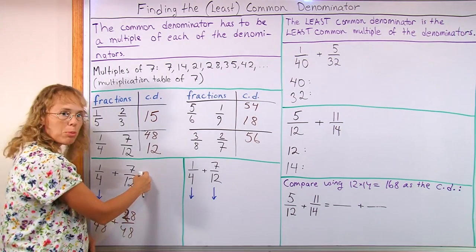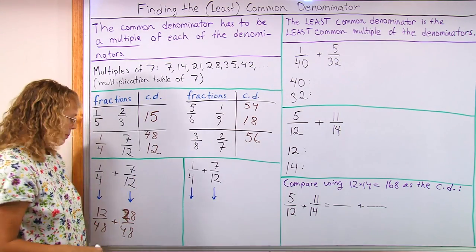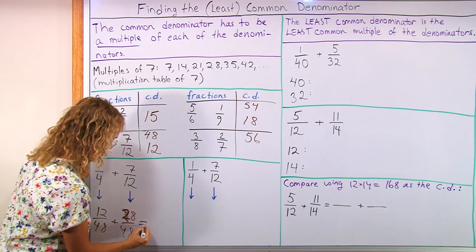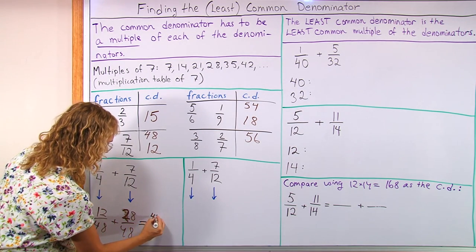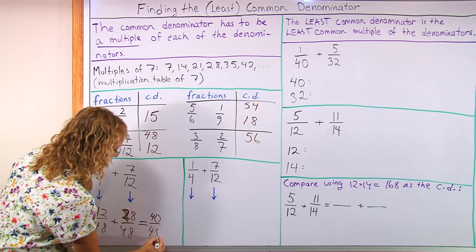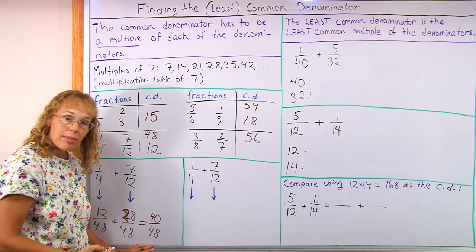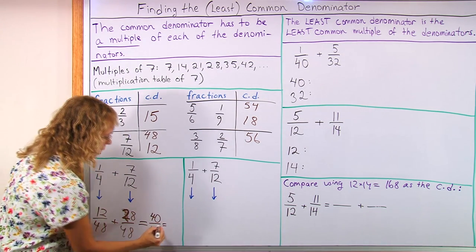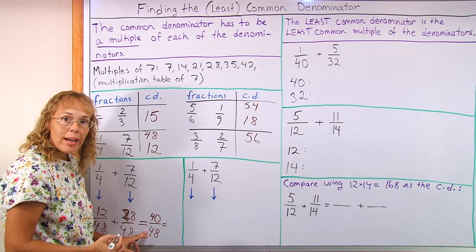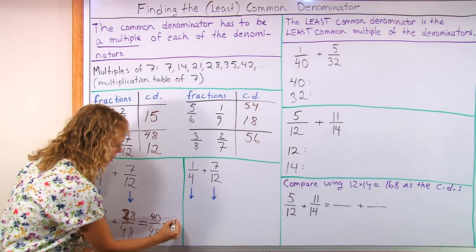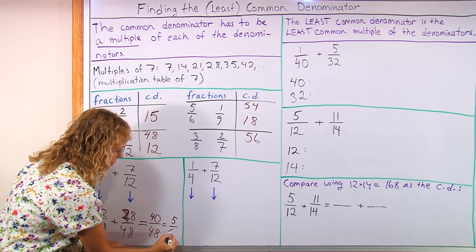And the principle to use here is to use equivalent fractions. And now we add 12 plus 28 equals 40, 40 over 48. Now this fraction simplifies. If you've studied simplifying fractions, these numbers are both divisible by 8. So I can go 40 divided by 8 and 48 divided by 8.